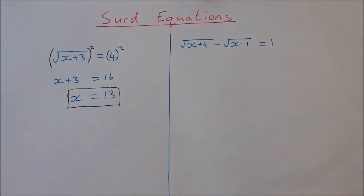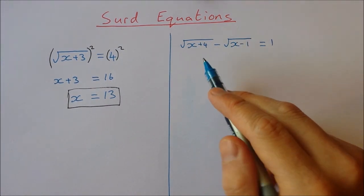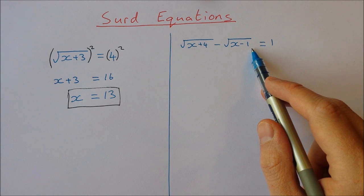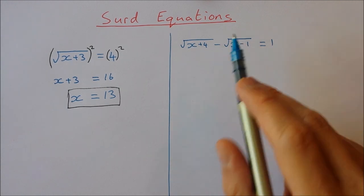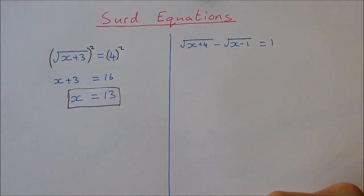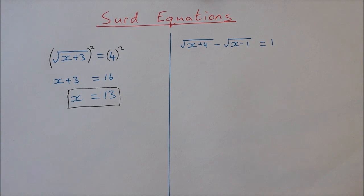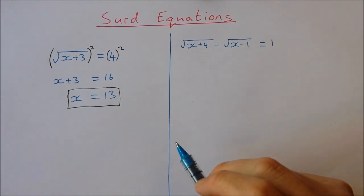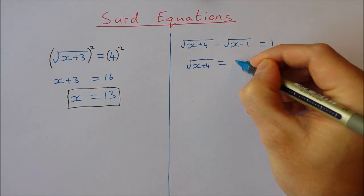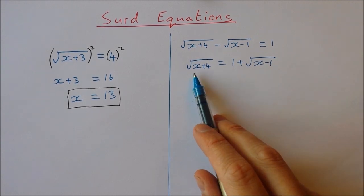For the second equation it's a little bit trickier — we have to first isolate one of the square roots and then square both sides. If we squared both sides immediately, we'd get the square root of x plus 4 multiplied by the square root of x minus 1 from the cross term, which won't help us. So I'm going to isolate the square root of x plus 4 on the left-hand side by adding the square root of x minus 1 to both sides, giving us: the square root of x plus 4 equals 1 plus the square root of x minus 1.